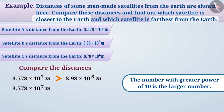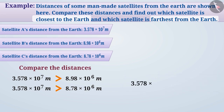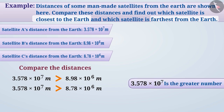Similarly, comparing 3.578 × 10 to the power of 7 metres and 8.78 × 10 to the power of 6 metres, we can conclude that 3.578 × 10 to the power of 7 is the greater number. Therefore, satellite A is the farthest from the earth.